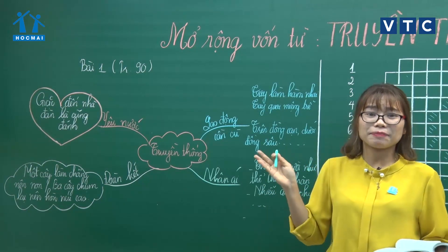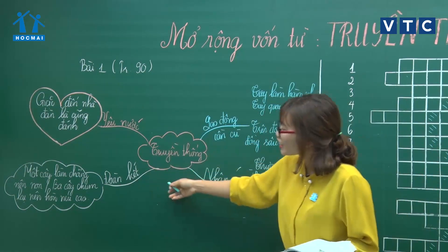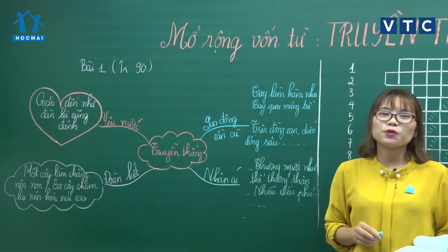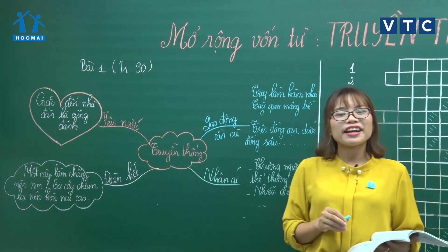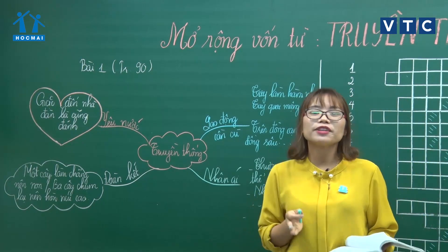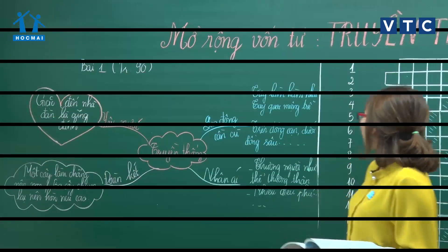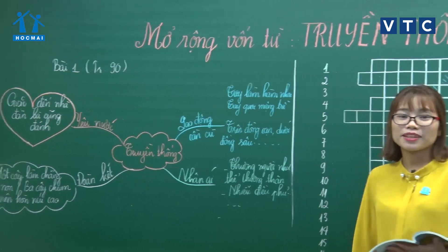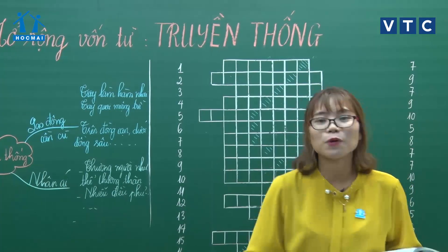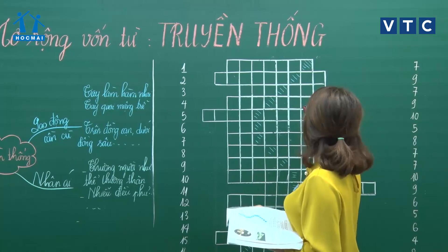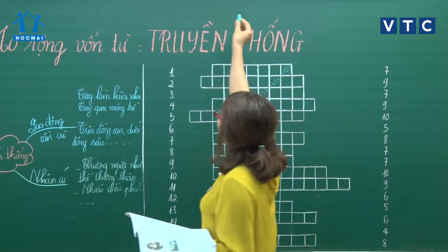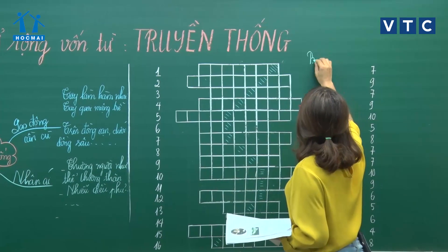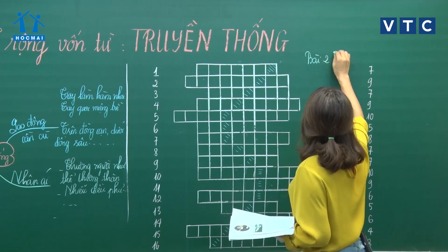Mỗi một phần cô sẽ gợi ý vài câu, về nhà nhiệm vụ là viết lại những câu cô Hoa đã gợi ý và tìm thêm những câu mới. Còn nhiệm vụ bây giờ là chuyển sang bài tập số 2. Bài tập này là những câu đố rất thú vị, trang 90. Bài 2.